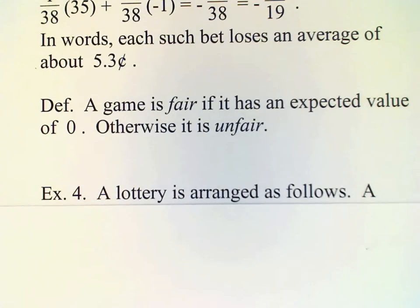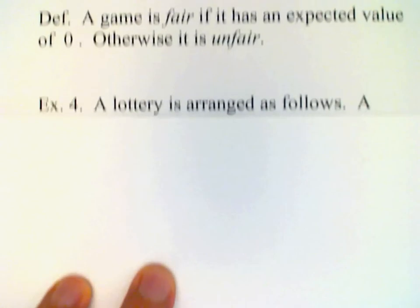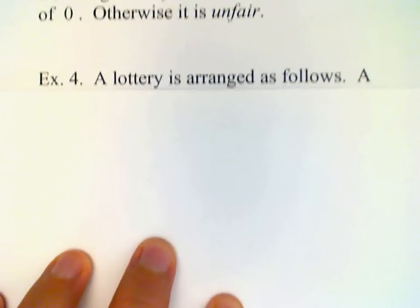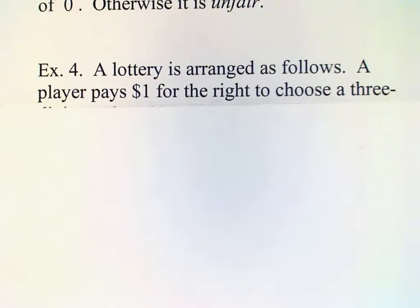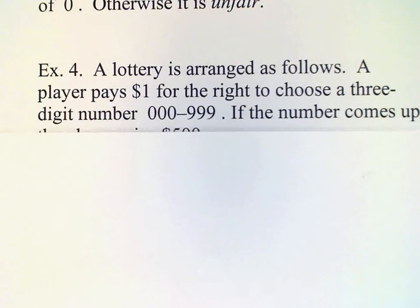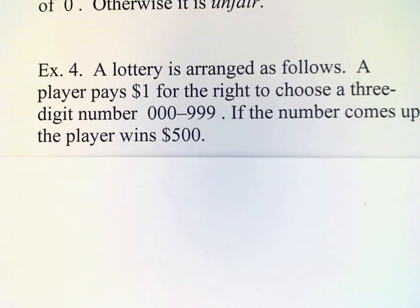Okay, so my next example, we have a lottery. A person playing the lottery is going to pay $1 to play. And for that $1, the person gets the right to choose a three-digit number, 000 up to 999. If the number comes up, then the player wins $500.